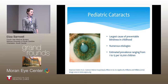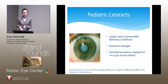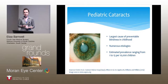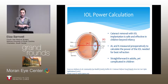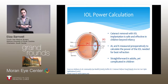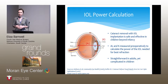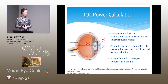Just a little background: pediatric cataracts are the largest cause of preventable blindness in childhood. There are numerous etiologies — they can be present at birth or form later during childhood. The estimated prevalence ranges from about 1 to 15 per 10,000 children. Like in adults, cataract removal with IOL implantation is found to be safe and effective in children beyond infancy. We take biometry measurements of axial length and keratometry preoperatively, which is straightforward in adults but complicated in children because their eyes are still growing, so the axial length hasn't yet reached its final measurement.